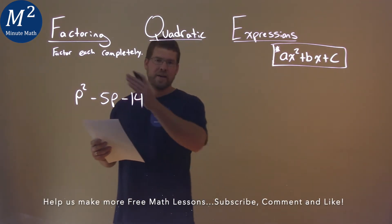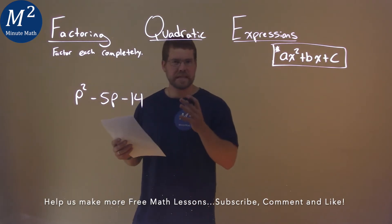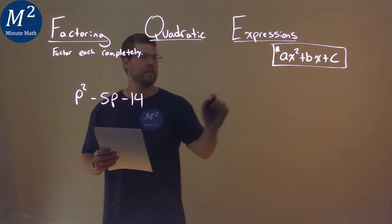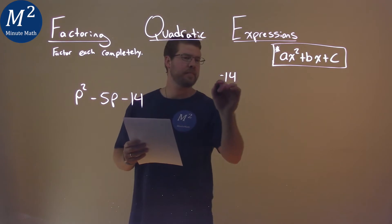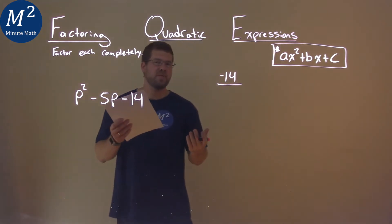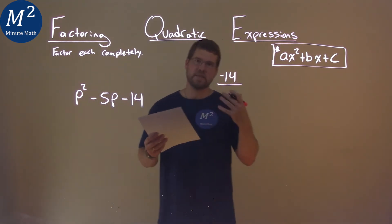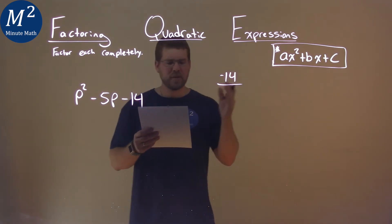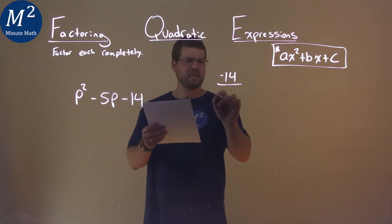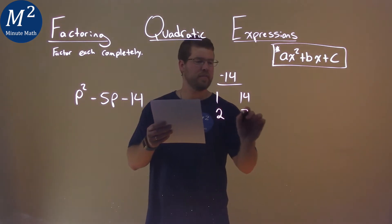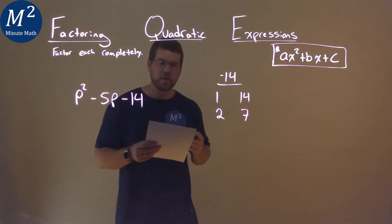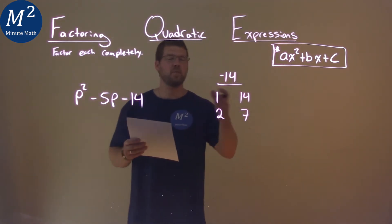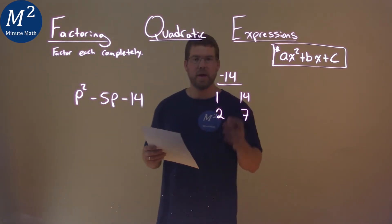I look at my a value, it's 1, so it's pretty standard here. With that, I look at my c value, which is negative 14. I have to ask myself what two numbers multiply to be negative 14, and I really just focus on the positive 14. So it's like 1 and 14, and 2 and 7. But since it's negative 14, I know one of these numbers will have to be negative of a pair.